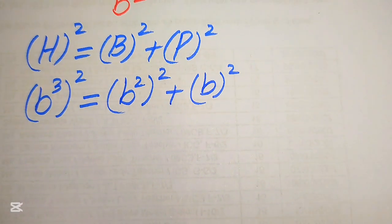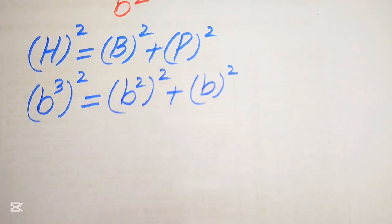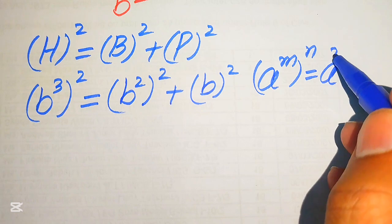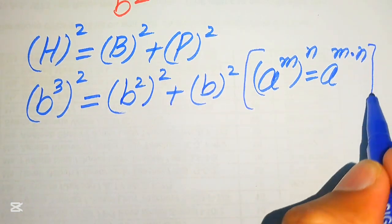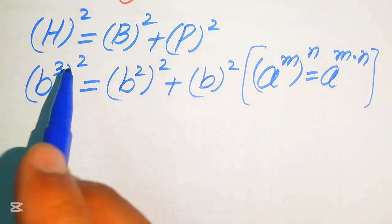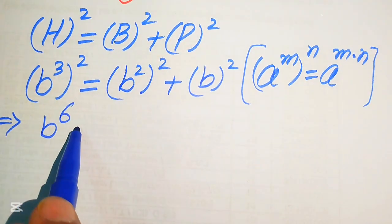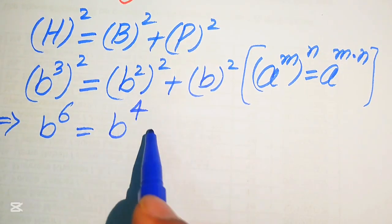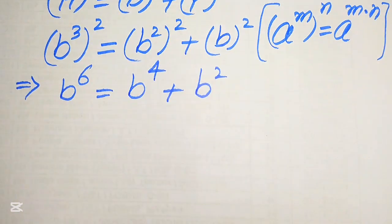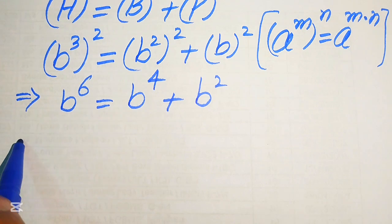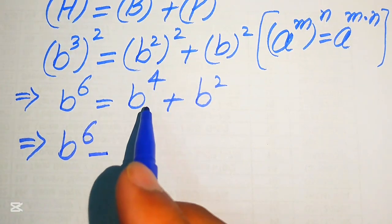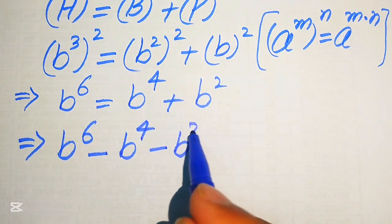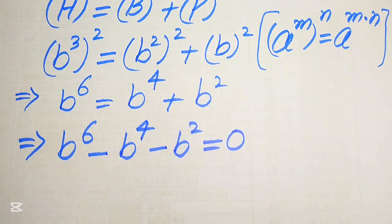We apply the exponent law: (aᵐ)ⁿ = aᵐⁿ. So (b³)² = b⁶ and (b²)² = b⁴. Moving all terms to the left-hand side gives us b⁶ minus b⁴ minus b² equals 0.